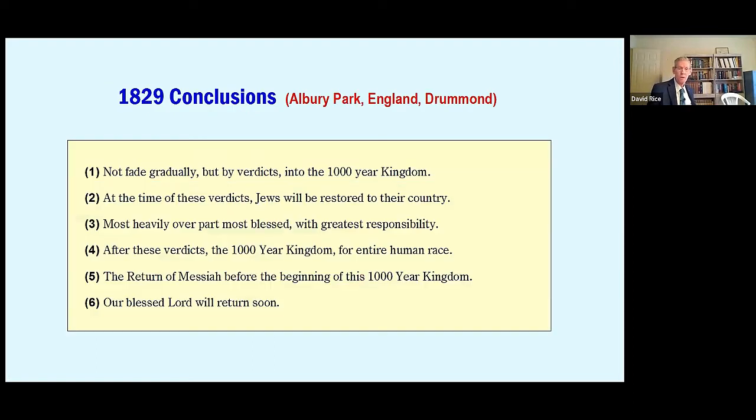There were six items that they agreed on. Now there's the six items in front of you, but that's just a summary. I'm going to read those six items for you. Number one, Christianity will not gradually fade by a universal preaching of the gospel into the thousand-year kingdom. Thousand-year kingdom, how about that. They knew about that. But we'll end by verdicts that the visible church and state are destroyed as once the Jewish state had been destroyed. In other words, like Judaism was judged, so Christendom will be judged.